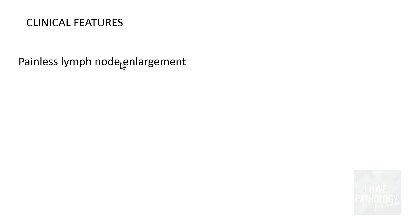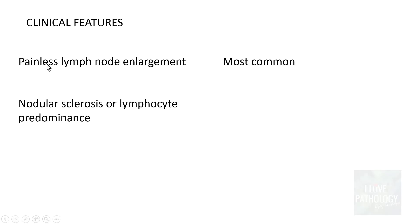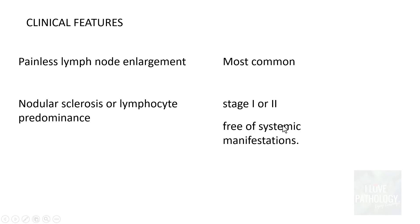Now that we have understood the staging of Hodgkin Lymphoma, let us see how these lymphomas manifest. Most often, Hodgkin Lymphoma presents as painless lymph node enlargement — that is the most common presentation. In cases of nodular sclerosis or lymphocyte predominance type, particularly stage one or stage two, these are often free of systemic manifestations such as fever, night sweats, or weight loss.